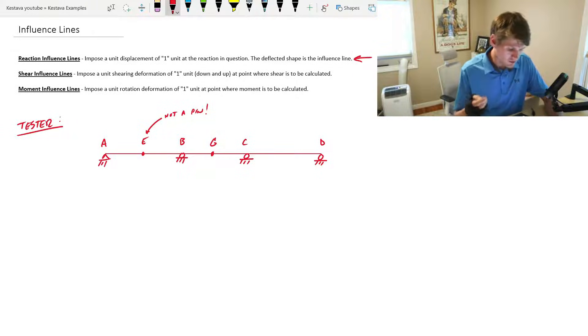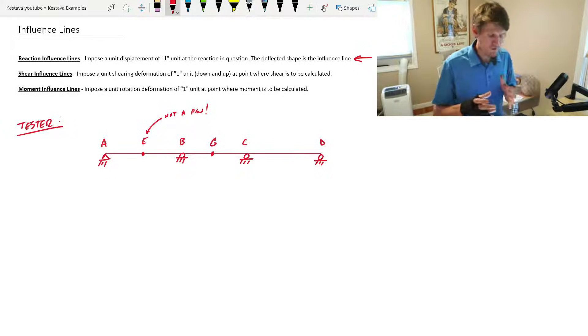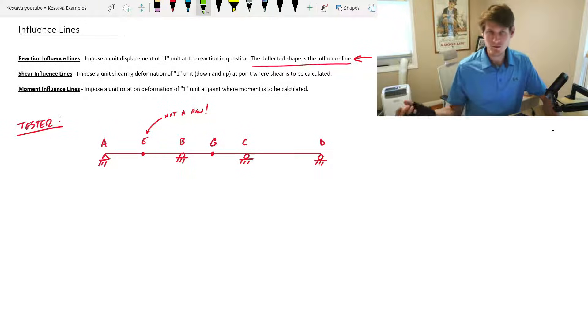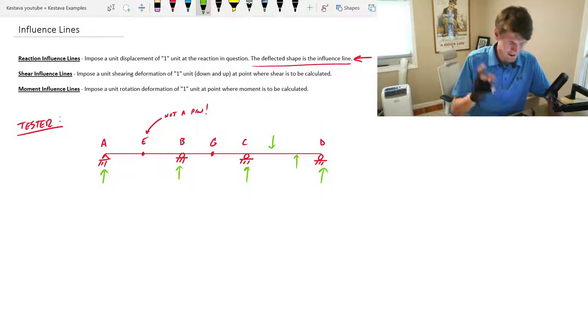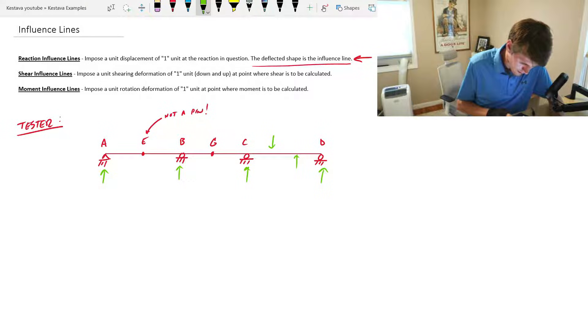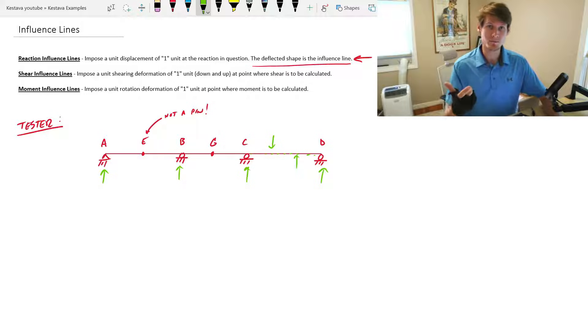For the first rule, you need to impose a unit displacement of one unit. That one I put in parentheses is unitless. It's not until later when you actually apply the loading on your system that we use the influence diagram to then spit out an actual value with kips or pounds or whatever. Displacement of one unit at the reaction in question. The deflected shape is the influence line. Of the three, this is the easiest one. You only use this rule at your boundary conditions at A, B, C, D. You can't use the first rule to find a force or a reaction somewhere along a beam because that's where there's shear and potentially moment present. It's only at a boundary condition do you have a set reaction.